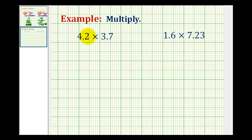So notice that this decimal has one decimal place, and this decimal also has one decimal place. So the sum of these decimal places tells us how many decimal places our product must have to the right of the decimal. So we must have two decimal places to the right of the decimal in our product.